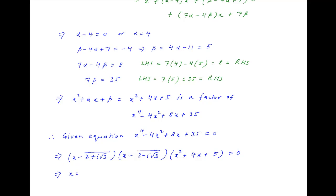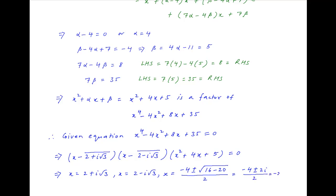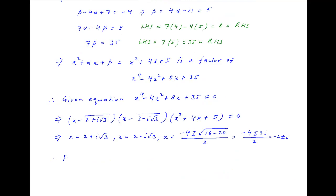Therefore the roots of this equation are 2 + i√3 and 2 - i√3. The other two roots come from x² + 4x + 5 = 0: x = (-4 ± √(16 - 20)) / 2 = (-4 ± √(-4)) / 2 = (-4 ± 2i) / 2 = -2 ± i. Therefore the four roots of the given equation are 2 + i√3, 2 - i√3, -2 + i, and -2 - i.